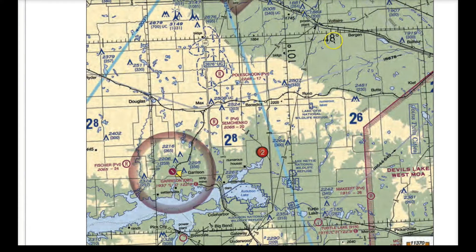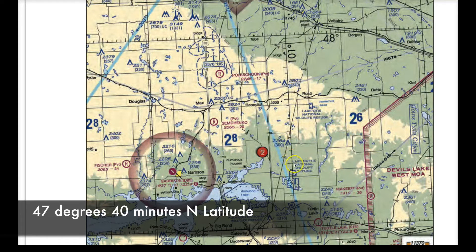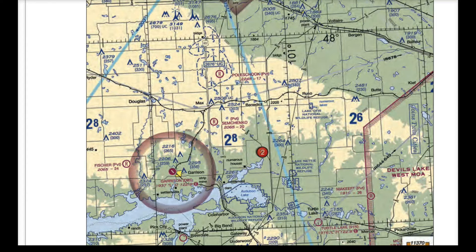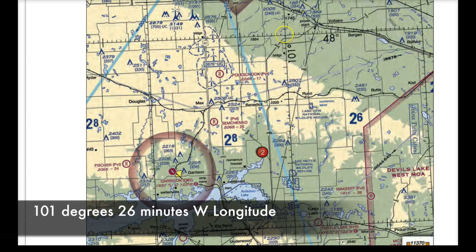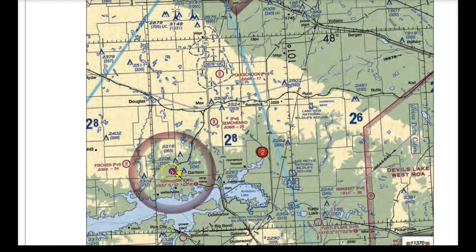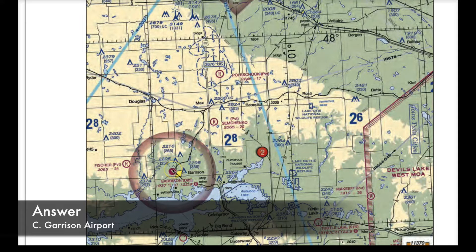Let's take a look one more time. From 48 degrees, come back 10 — that's 47 degrees 50 minutes. Another 10 — that's 47 degrees 40 minutes. That's our north latitude line, and coming right across, that lines up with Garrison. For the longitude: 101 degrees, 26 minutes — count 101, 10, 20, then 6 additional minutes. Come straight down and Garrison Airport lines up again with both figures. So the answer is C, Garrison Airport, question number one.